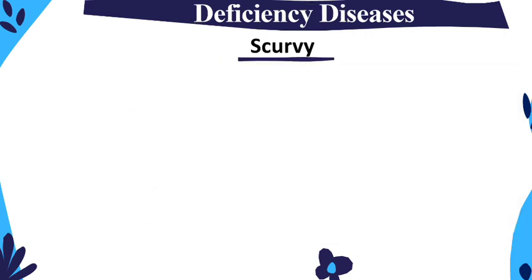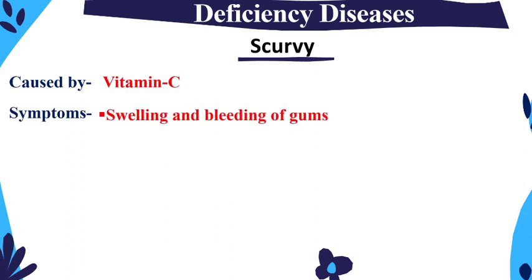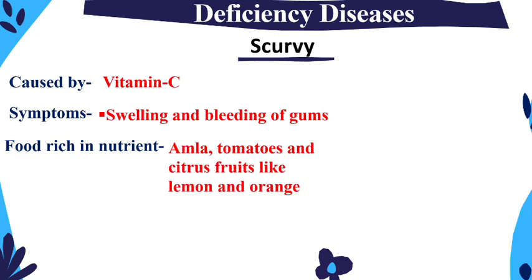Next is Scurvy, caused by Vitamin C deficiency. Symptoms include swelling of the gums and bleeding of the gums. To prevent scurvy, consume foods rich in Vitamin C such as citrus fruits like lemon and orange.